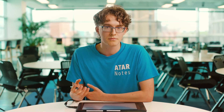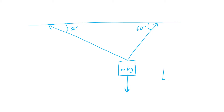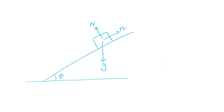The coordinate system you use will vary depending on the question. For a question like this where you've got forces acting straight up and down you're going to use a horizontal and vertical coordinate system. On the other hand when you've got an object on a slope it's easiest to use a coordinate system that aligns with the slope.